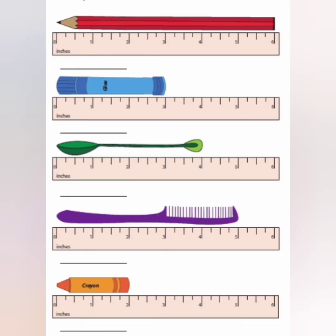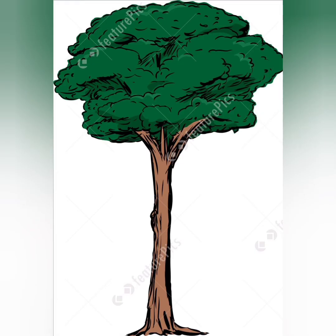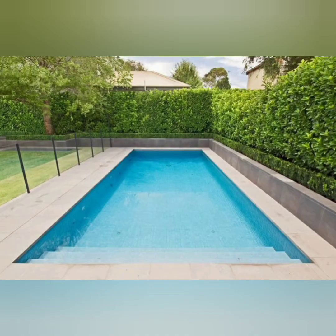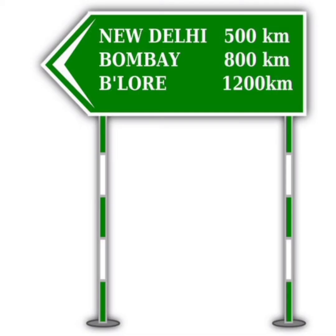Smaller lengths are measured using millimeters and centimeters. Here you can see a centimeter scale used to measure smaller objects. Longer lengths are measured using meters — such as the height of a tree, the length of a swimming pool, and the length of dress materials. The geographical length is called distance. Distance is measured in kilometers, for example the distance from your house to a park.